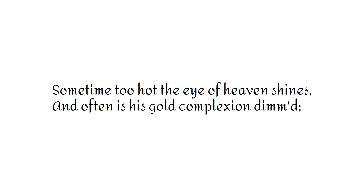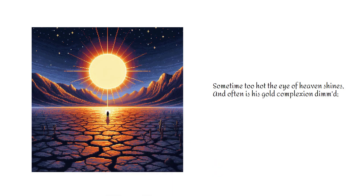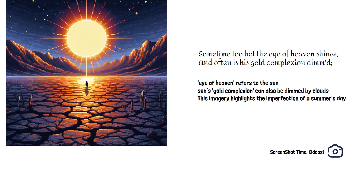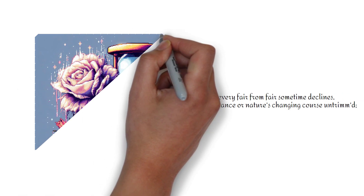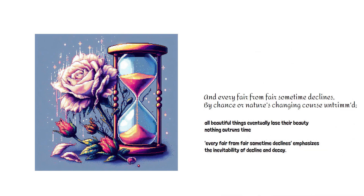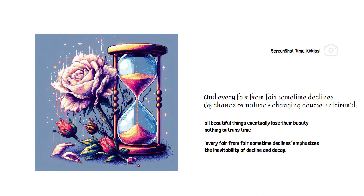"Sometime too hot the eye of heaven shines." The eye of heaven refers to the sun, which can sometimes be too hot. The sun's gold complexion can also be dimmed by clouds or other weather changes. This imagery highlights the variability and imperfection of a summer's day. "And every fair from fair sometime declines, by chance or nature's changing course untrimmed." Shakespeare notes that all beautiful things eventually lose their beauty, whether by chance or the natural passage of time. The phrase "every fair from fair sometime declines" emphasizes the inevitability of decline and decay.